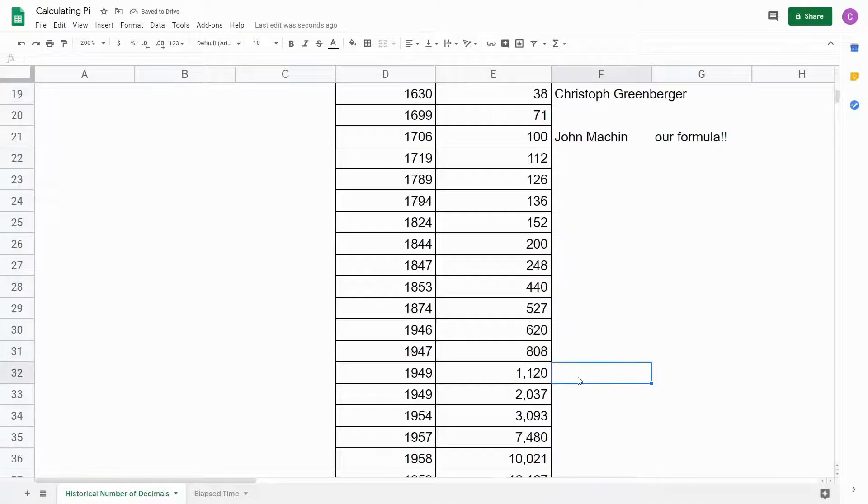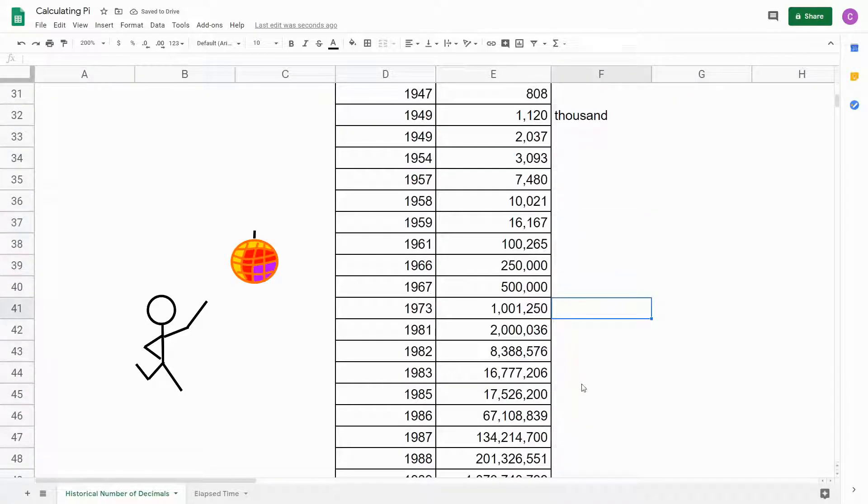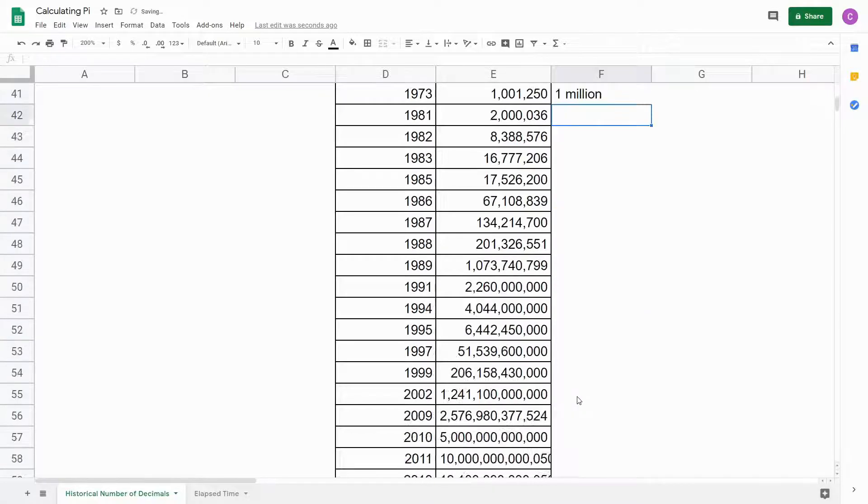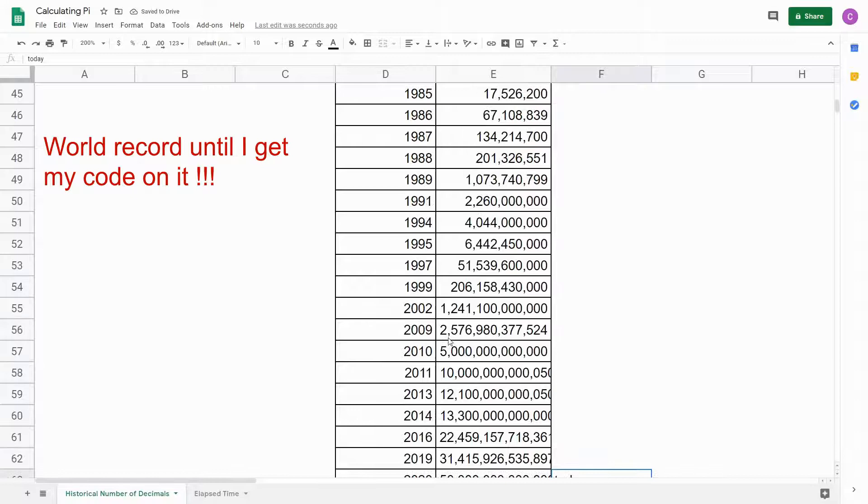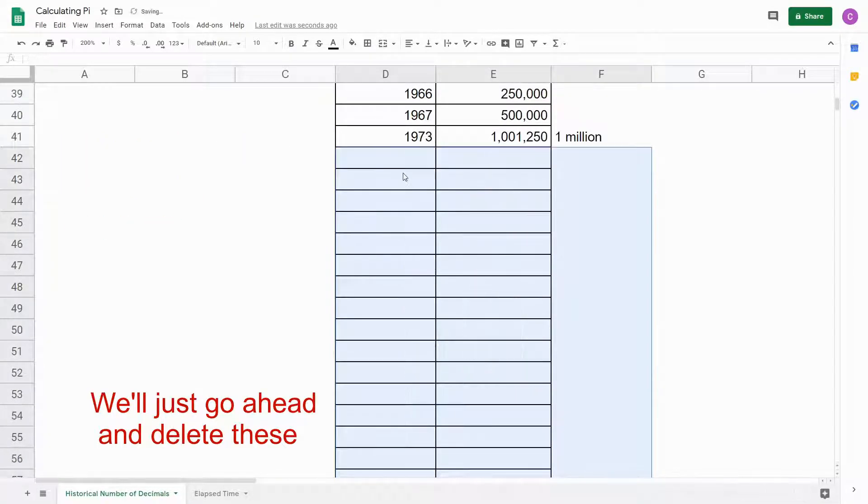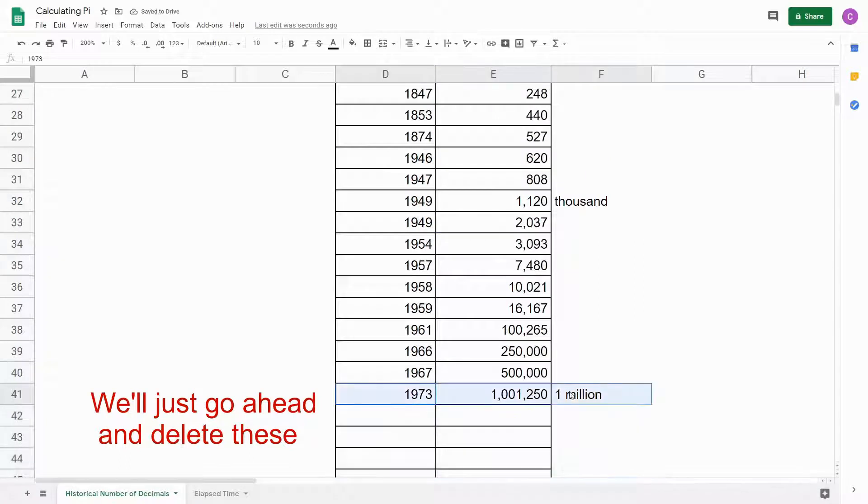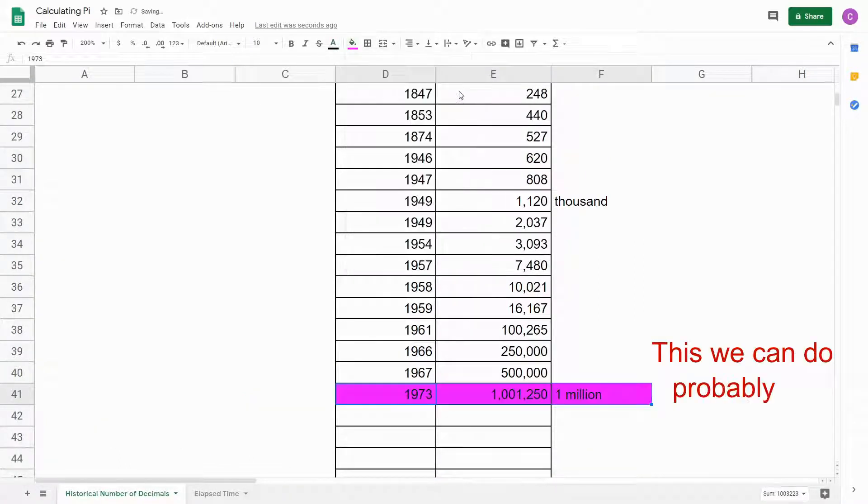That steadily increased, and around 1706, John Macken developed a formula for pi that let him calculate 100 decimal places. That's the formula we're going to be using today. Yes, I know you haven't heard of John Macken either, but since we're using his formula, he gets a shout-out. They broke 1,000 decimals by 1950, and they got to 1 million decimals just after 1970. Billions and trillions of decimals will crack soon after, and as of today, the world record stands at 50 trillion decimals.